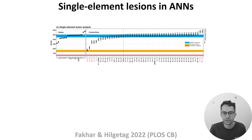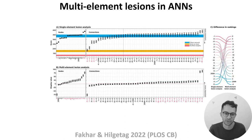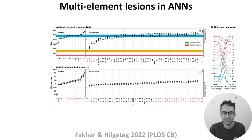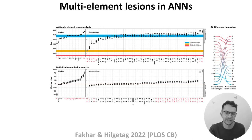So how can we overcome that issue? One solution the authors propose is to use a multi-element lesioning approach. In this approach, you sample combinations of lesions — for example, silence node 1 and check the score, then silence nodes 1 and 2 together, then 1, 2, and 3 together, and so on — then calculate each node's importance by comparing the network's score with and without the node across different combinations. The results shown in panel B and panel C reveal that single and multi-node ablations assign different importance to the different nodes. This and other results lead the authors to conclude that even small artificial neural networks can be really challenging to interpret, and so we should be cautious when interpreting manipulation results from larger and more complex systems.